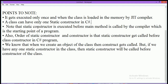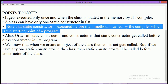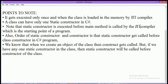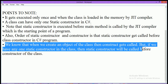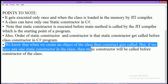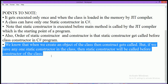The static constructor is executed before the main method because it is called by the JIT compiler, which is the starting point of the program. The order is that the static constructor gets called before the class constructor. If both a static constructor and a regular constructor are present in a class, the static constructor gets called first, then the constructor is called when we create an object.